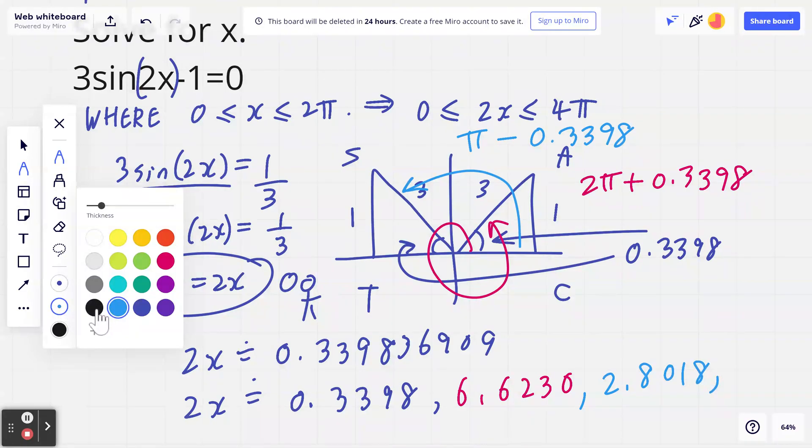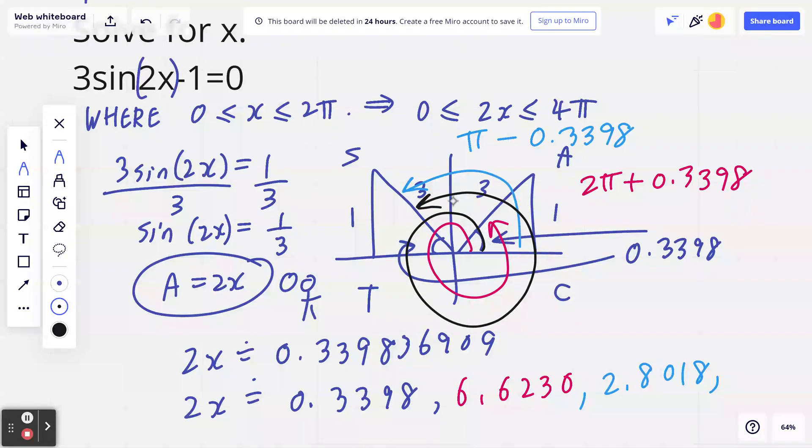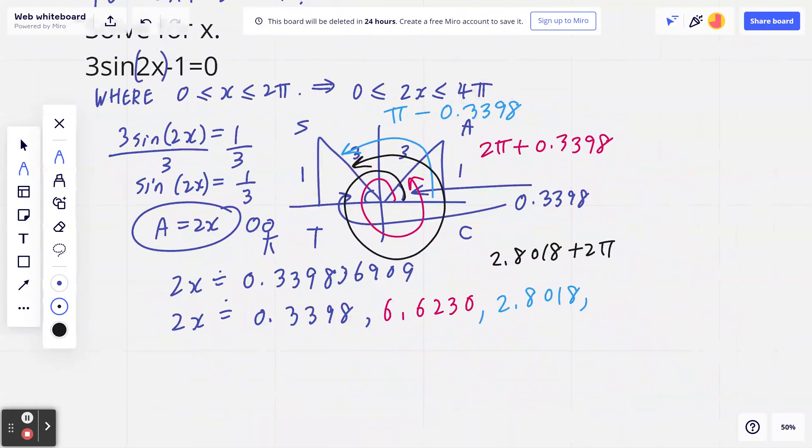And of course, last but not least, if you think about one full rotation plus this angle, then you're going to get this number, which is 2.8018. You're adding it with one full cycle. So if I take the calculator, I'm adding it by 2π, this will give me the fourth angle, which is 9.0850.